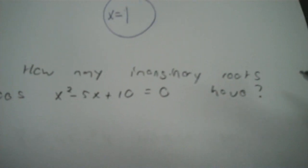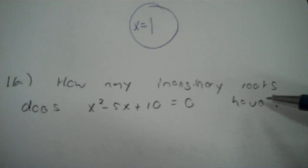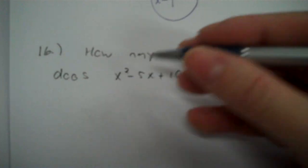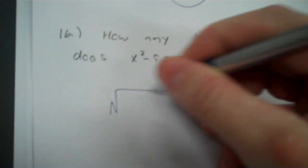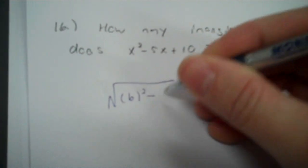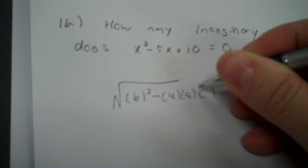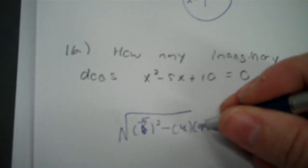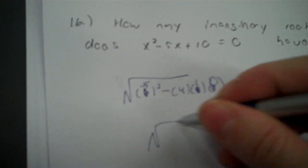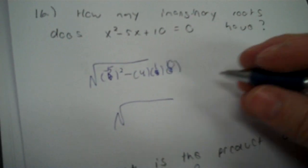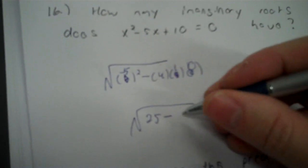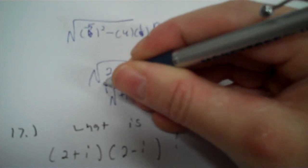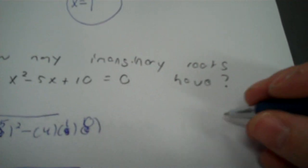How many imaginary roots does that have? To find out whether you have real or imaginary roots, you use the discriminant part of the quadratic formula — just the square root part: b squared minus 4ac. B is negative 5, a is 1, c is 10. Negative 5 squared is 25; 4 times 1 times 10 is 40. We have 25 minus 40, which is negative — so that would be i. It would have two imaginary roots.